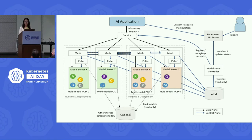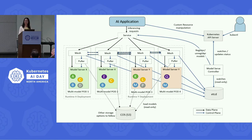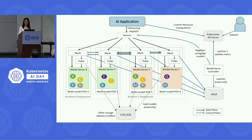If a particular model is under heavy load, it will be scaled across more pods. You can see little circles inside the serving runtime representing different models. For example, Model B in the blue circle is scaled to two replicas, so it can handle more inference requests than Model A. The mesh sidecar also acts as a router — Model Mesh stores a model-to-pod-ID routing table in an external etcd. When an inference request comes in, the sidecar looks up the routing table to find which model is loaded in which pod and routes the request accordingly.